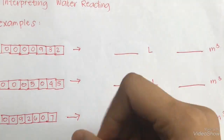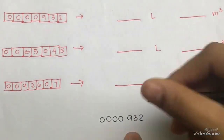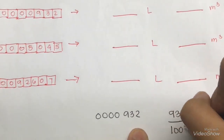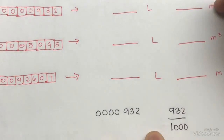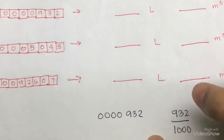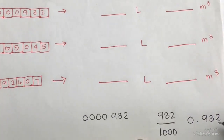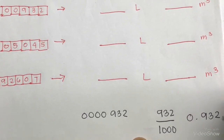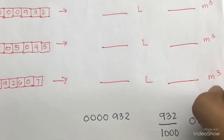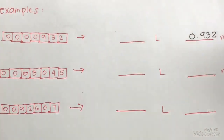In number 1, the given reading is 0.00932. To interpret it, use the whole numbers: 932 over 1,000. To convert it to cubic meters, divide 932 by 1,000. You can also move the decimal point three places to the left. So the answer is 0.932 cubic meters.